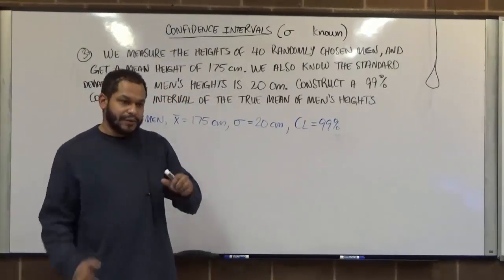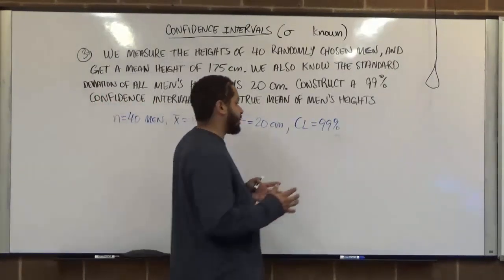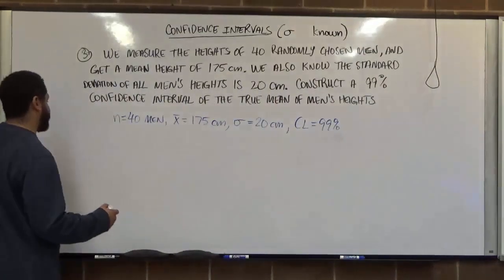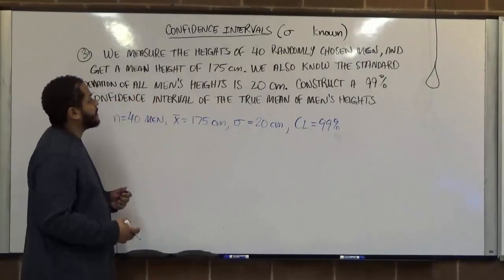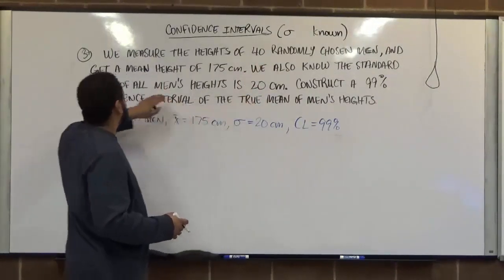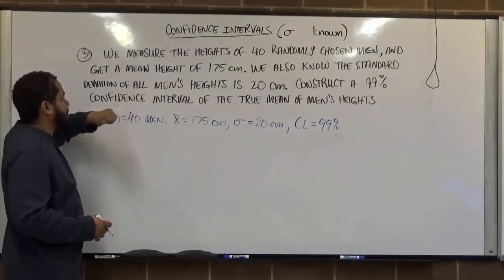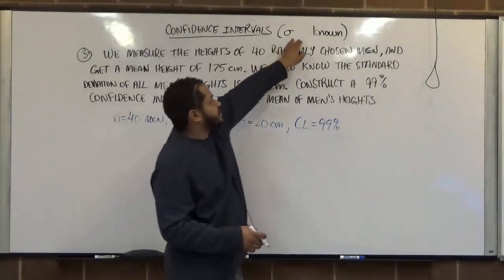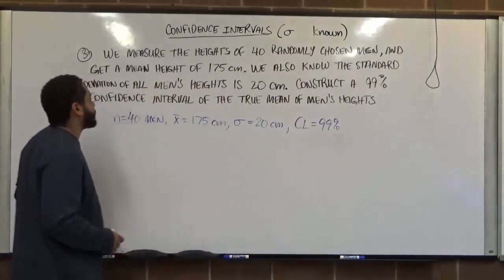Now, we know three common confidence levels that exist. And of those confidence levels, we know the critical values for z. In this case, we're using z because this is a population standard deviation from using a population of all men's heights and also sigma is known. So this is a normal distribution we're using.